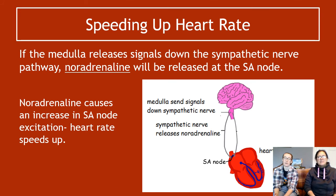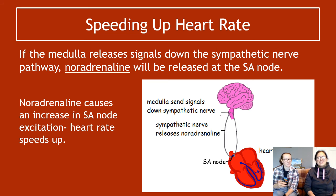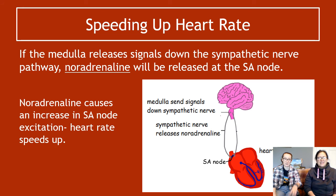To speed up the heart rate, the medulla sends a signal down the sympathetic nerve pathway. This causes noradrenaline to be released at the SA node. Noradrenaline causes excitation of the SA node, which results in the heart rate speeding up. This is worth memorizing as a potential exam question: medulla signals down sympathetic nerve pathway → noradrenaline released at SA node → excitation of SA node → increased heart rate.